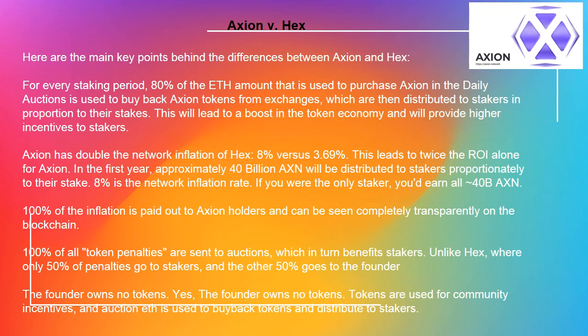100% of all token penalties are sent to auctions, which in turn benefits stakers. Unlike HEX, where only 50% of penalties go to stakers and the other 50% goes to the founder.